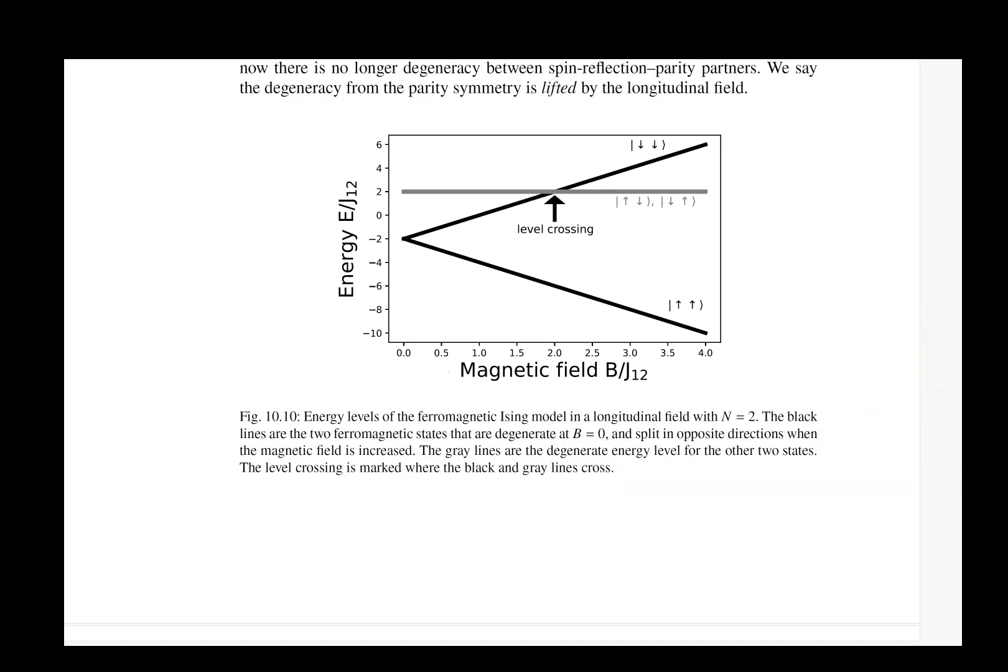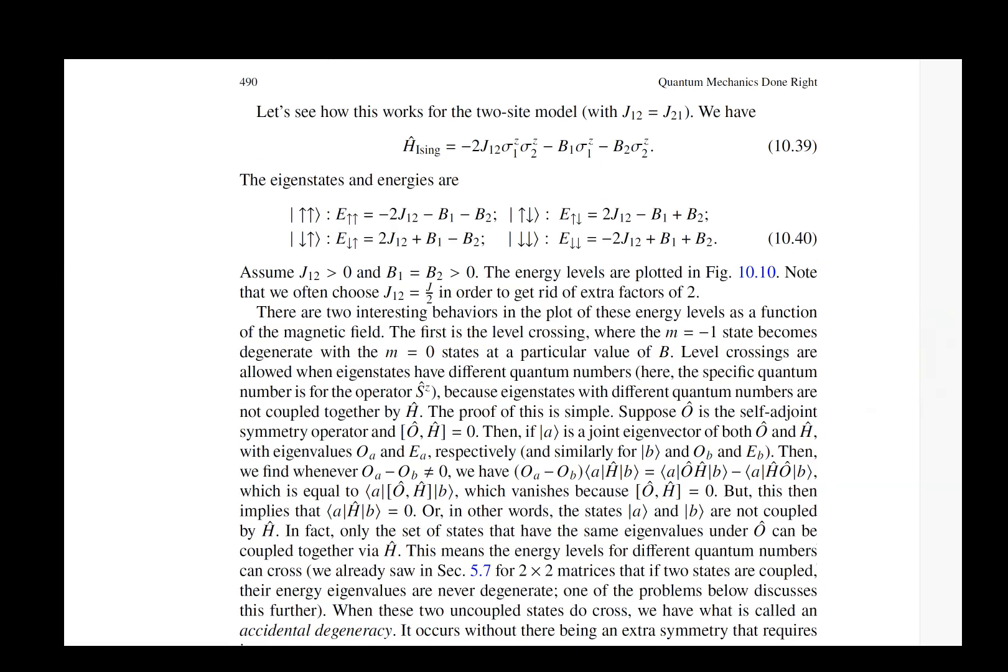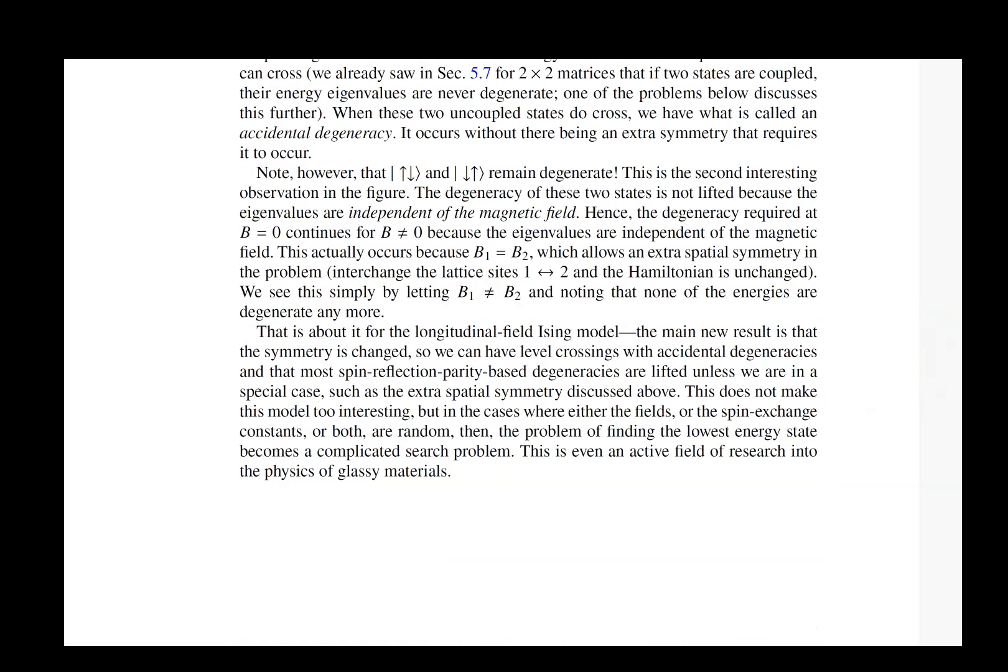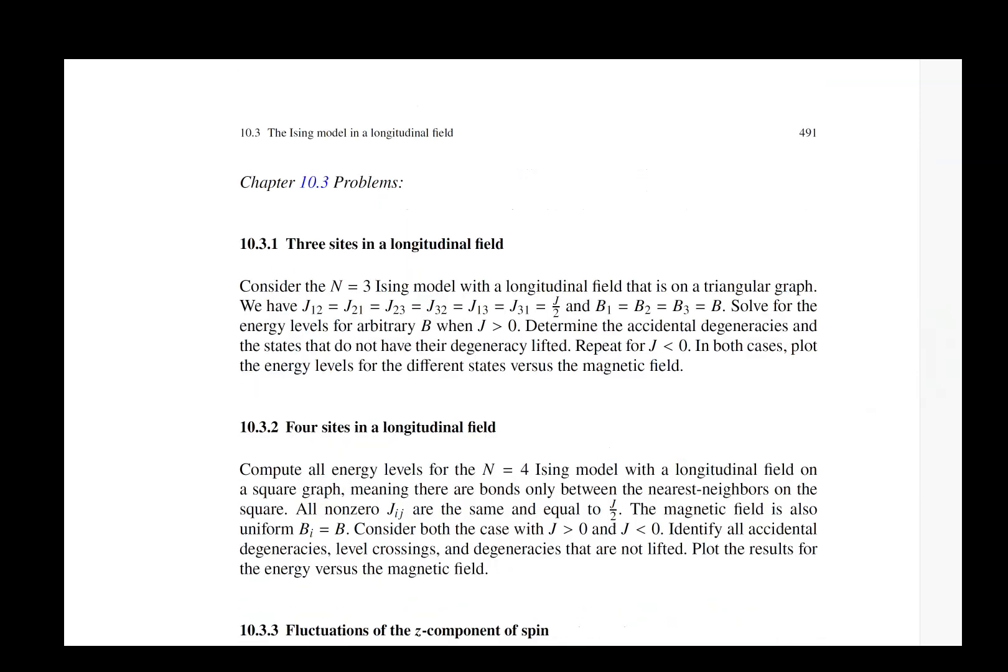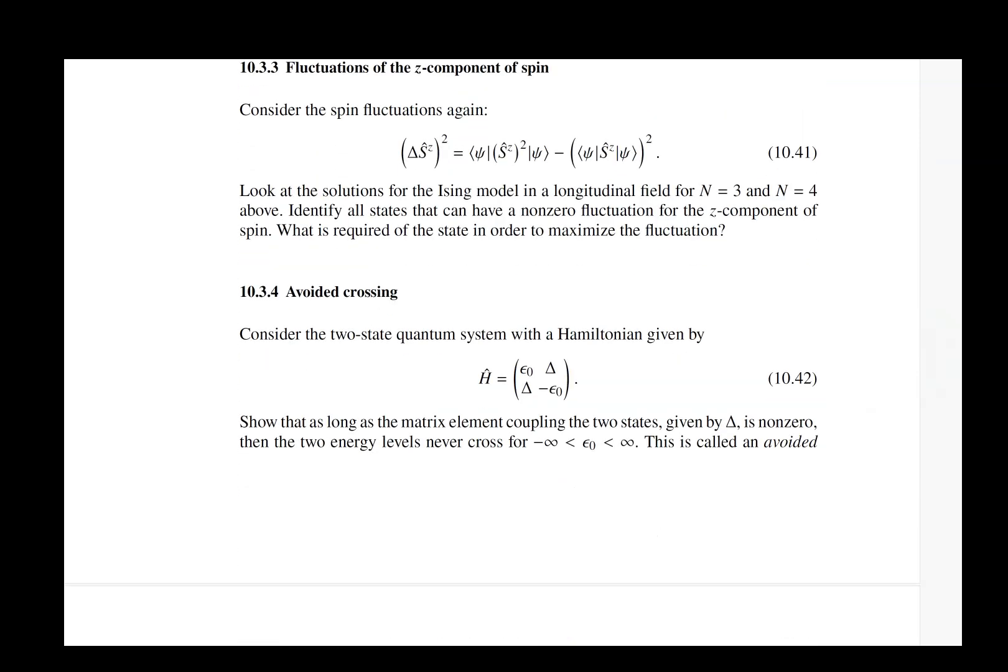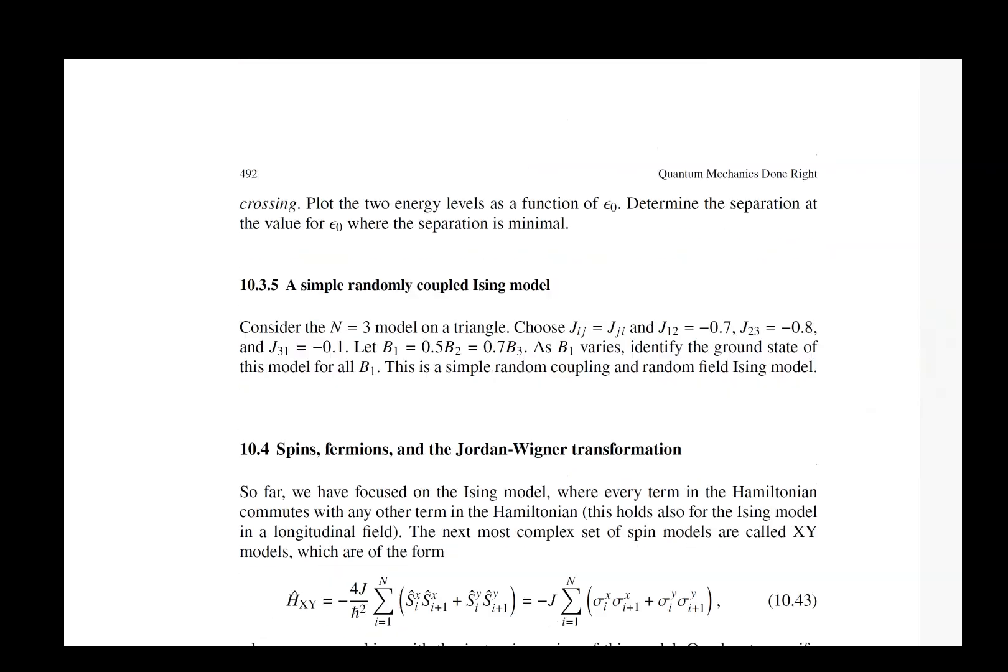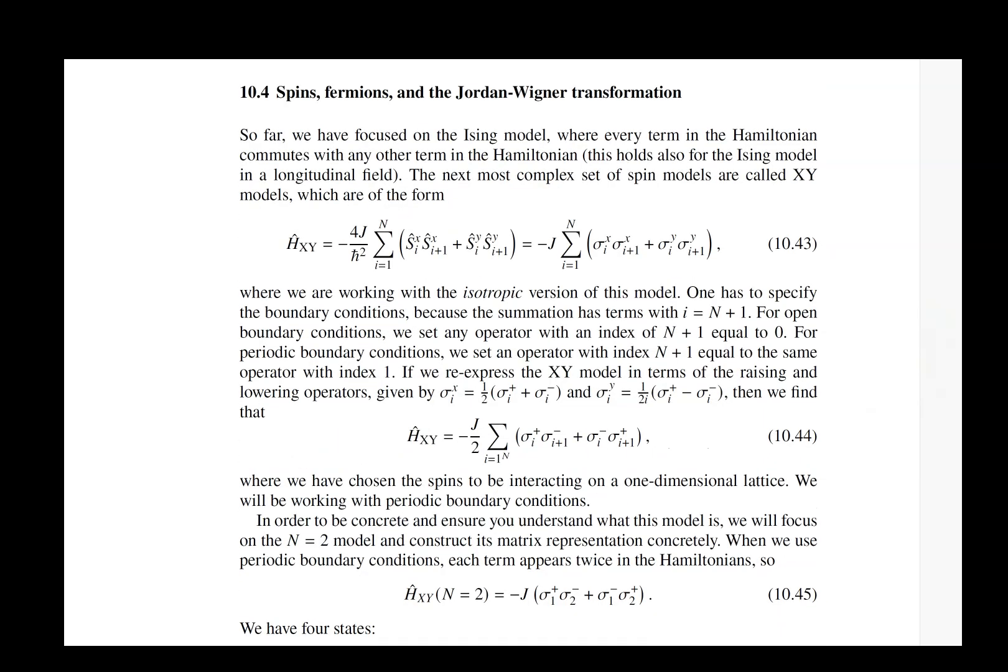Ising model in a longitudinal field is a relatively simple problem to examine, but it does have things called level crossings that occur. That's an interesting topic that is worthwhile discussing why and when you can have level crossings.